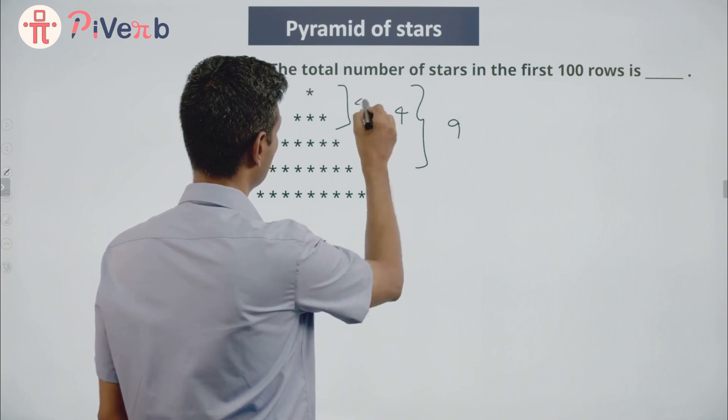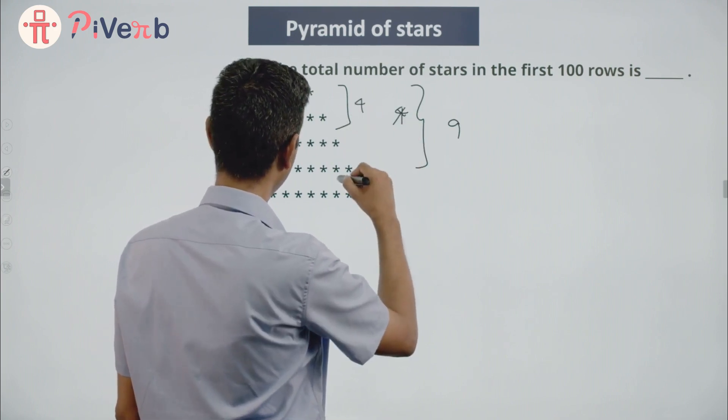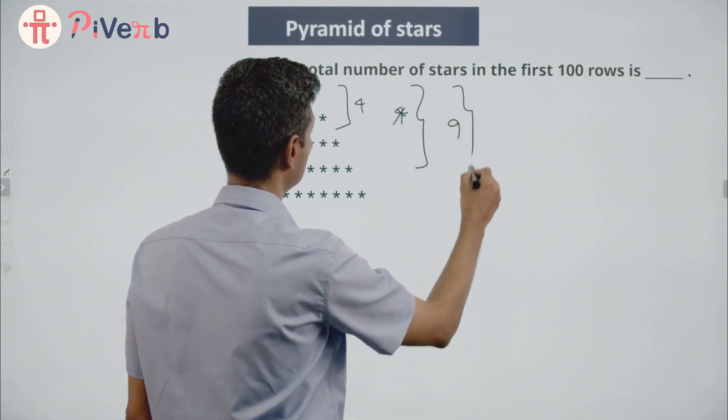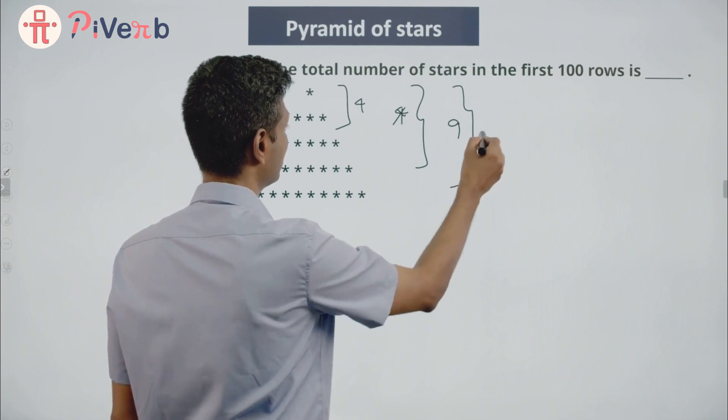2 rows it is 4, suppose we do 4 rows, 9 here plus 7, 16.